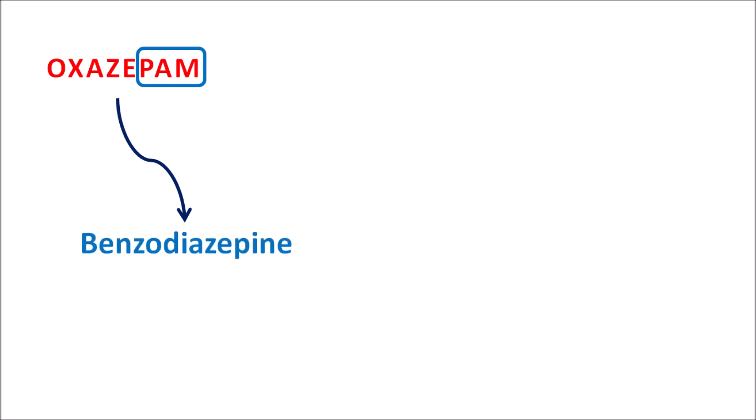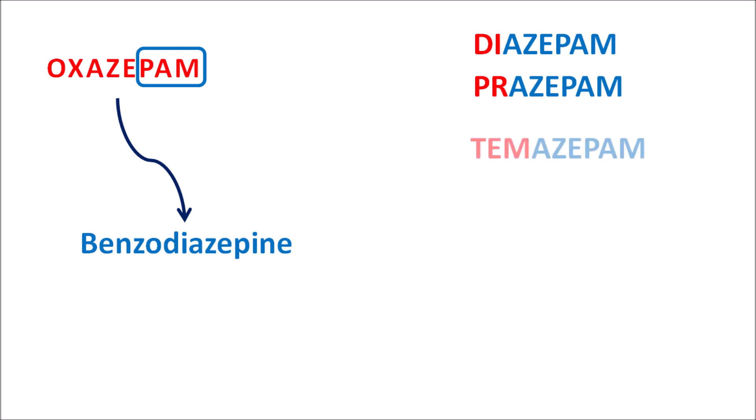Interestingly, Oxegepom is the metabolite of many benzodiazepines like Dijepom, Prajepom and Temazepom. All these are long-acting benzodiazepines. When they are metabolized by hydroxylation they can produce Oxegepom. So Oxegepom is the active metabolite of long-acting benzodiazepines.